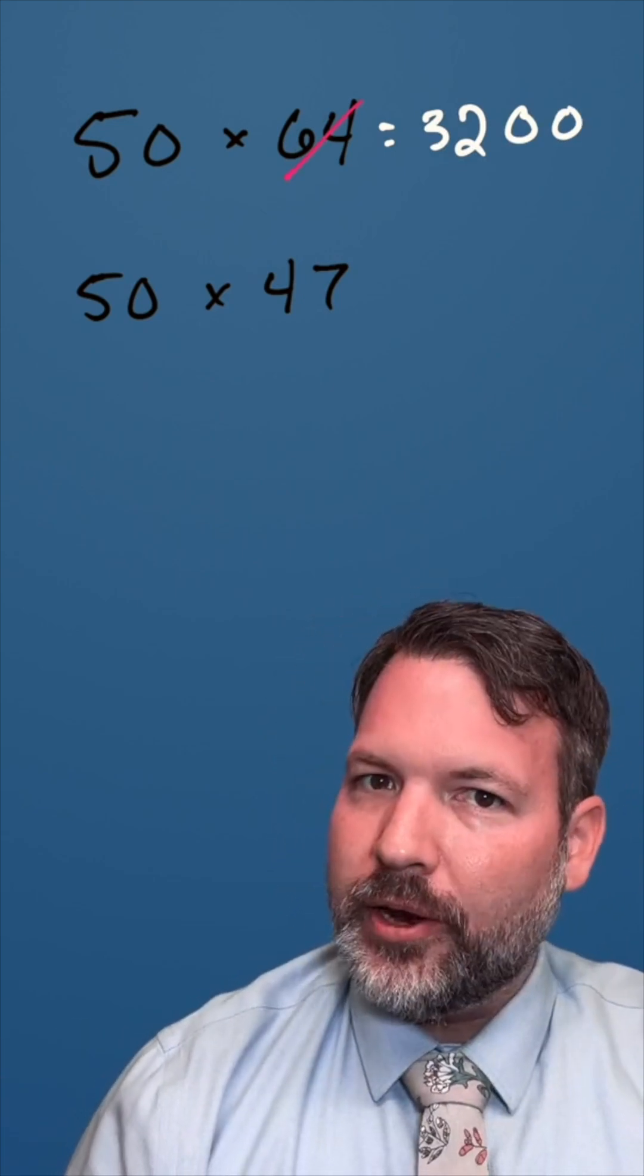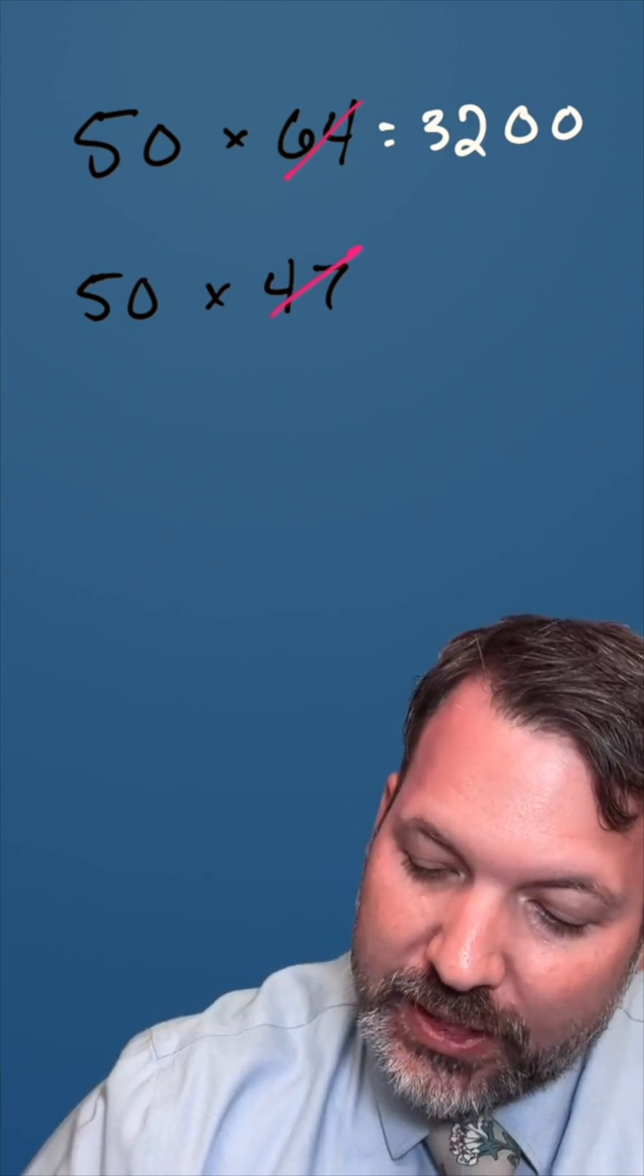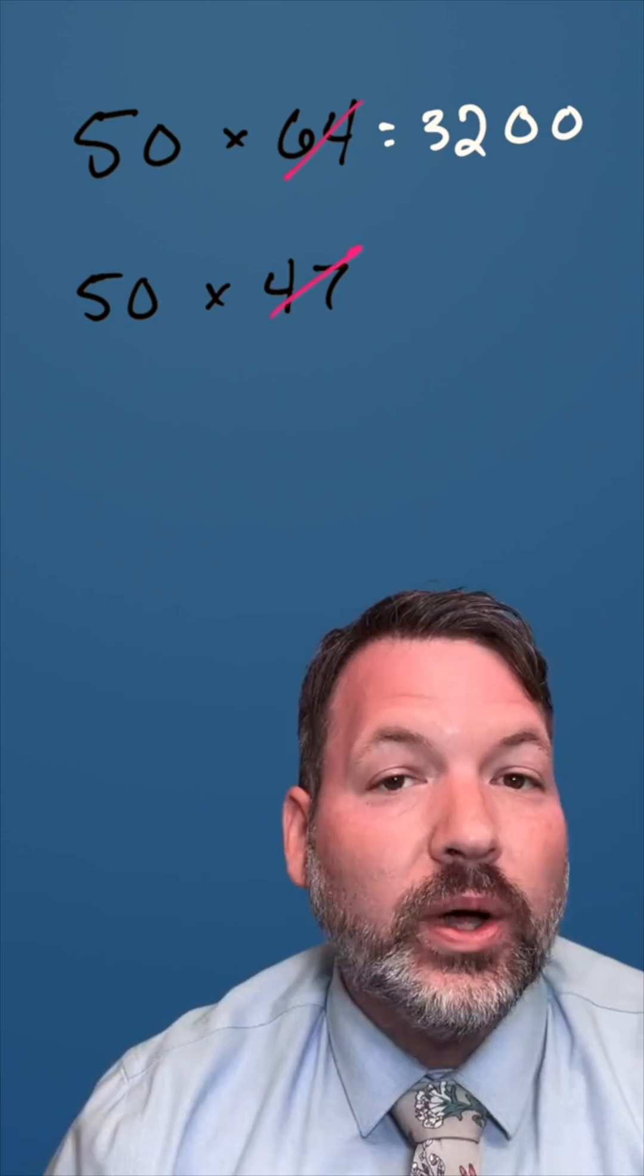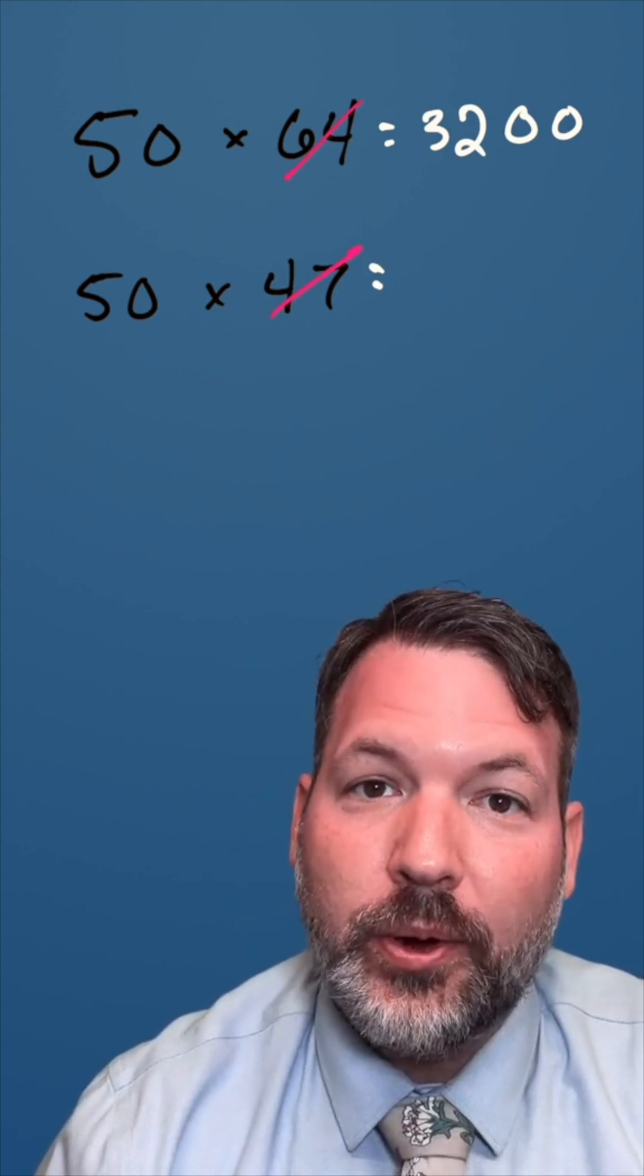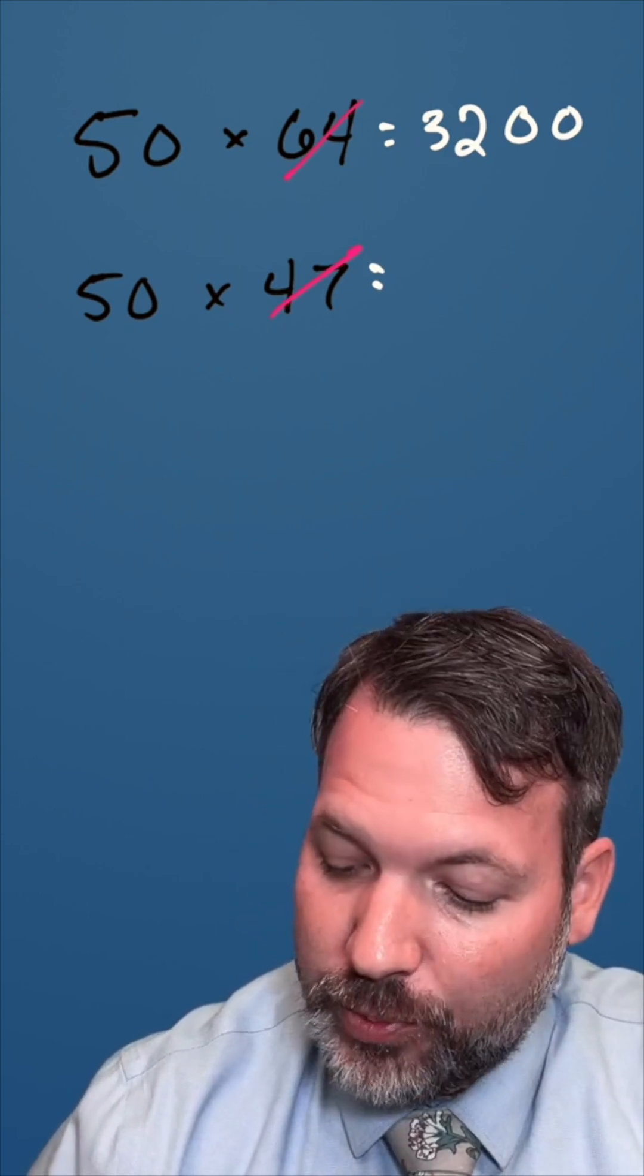I can hear the objection already. What about numbers that do have a remainder? Take a look at something like 50 times 47. What's half of 47? Well, ignoring the fact that it's odd and is going to have a remainder, half of 47 would be 23.